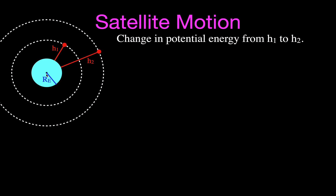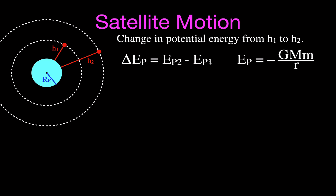Now to find the change in the potential energy, we're going to use this equation: the change in potential energy is the final potential energy minus the initial — always final minus initial — so it's the potential energy at orbit 2 minus the potential energy at height 1. When calculating potential energy at an elevation above the Earth's surface, we use the equation: PE = −GMm/r, where G is the gravitational constant 6.67 × 10⁻¹¹, M is the mass of the central object, m is the mass of the satellite, and r is the distance from the center of the Earth out to the orbital height — that is, the radius of the Earth plus the orbital height.